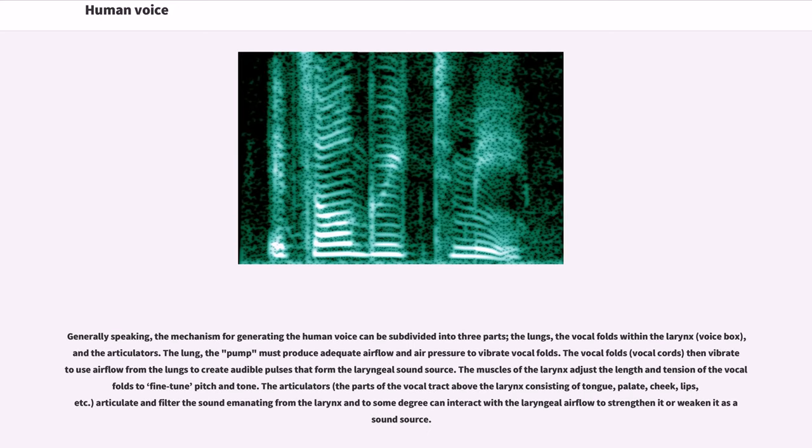Generally speaking, the mechanism for generating the human voice can be subdivided into three parts: the lungs, the vocal folds within the larynx, and the articulators.